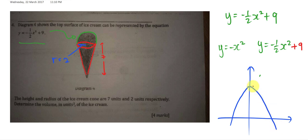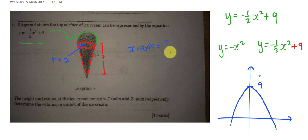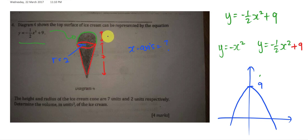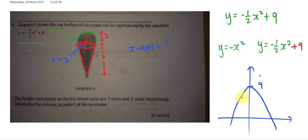The surface of the ice cream — the green curve — has its maximum at y equals nine. The key question is: where is the x-axis? Since the height of the cone is seven units and the radius is two, and here is the center point, both sides extend two units. So the maximum y-value of nine equals seven plus two, which tells us where to place the x-axis.